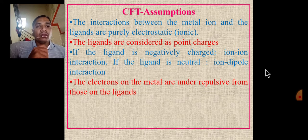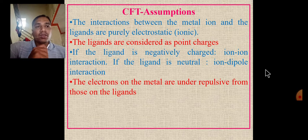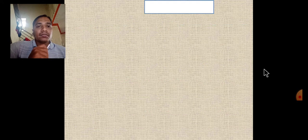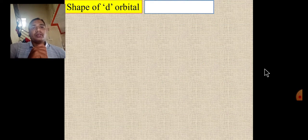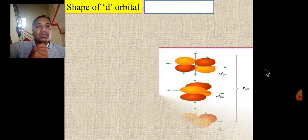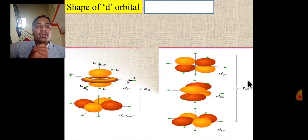In free metal ions, the total 5 d orbitals are degenerate. But in a complex, under the negative field of the ligands, the degeneracy of these 5 d orbitals is removed.